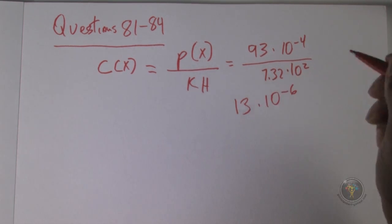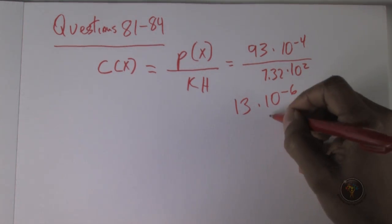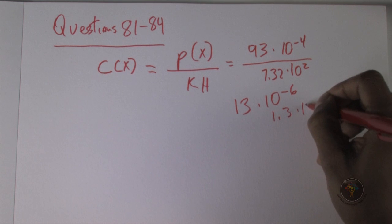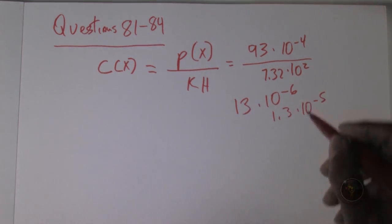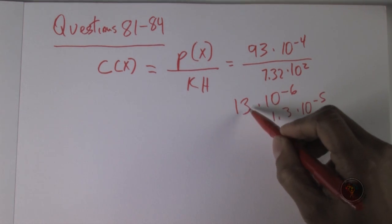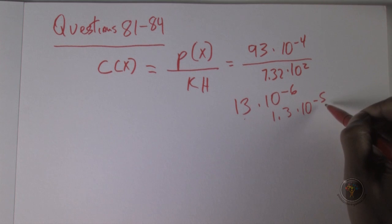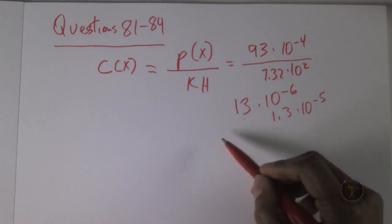So I'm going to just write 13, and then this is going to be minus 10 to the minus 6. I check my answer choices and indeed we have 1.3 times 10 to the minus 5. In case you forgot, if you remove a decimal point, you add a number up here, and if you add a decimal point, you remove a number up there, which means make it more negative.